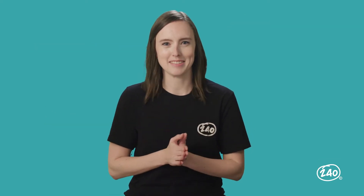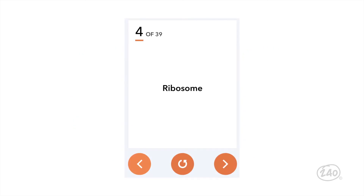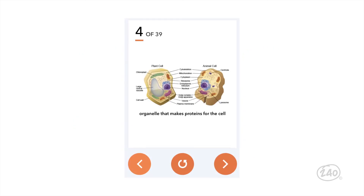Let's zoom in on organelles. There's a lot to know here, as each organelle has its own job within the cell. For example, ribosomes use RNA to make proteins, and mitochondria convert chemical energy into usable ATP. You can use the flashcards in our study guide to make sure you've got it down.